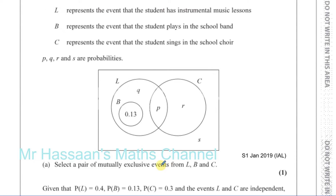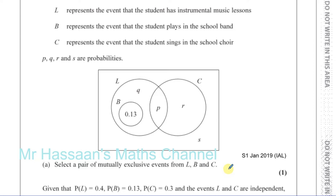Select a pair of mutually exclusive events from L, B and C. When events are mutually exclusive, they cannot take place at the same time. So any circles which do not overlap at all are mutually exclusive — there's nothing common between them. We can see that B and C are mutually exclusive because there's no overlap whatsoever, nothing in common between B and C. So B and C is the answer.